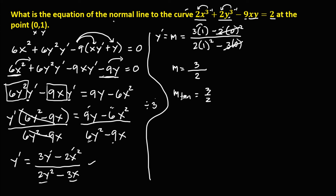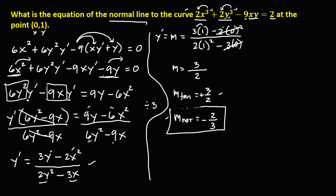Since the problem asks for the equation of the normal line, we need the slope of the normal line. The normal line is perpendicular to the tangent line. Since the slope of the tangent line is 3 over 2, the slope of the normal line is the negative reciprocal: negative 2 over 3. This is the slope we'll use to find the equation of the normal line.